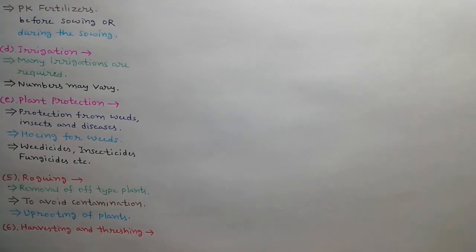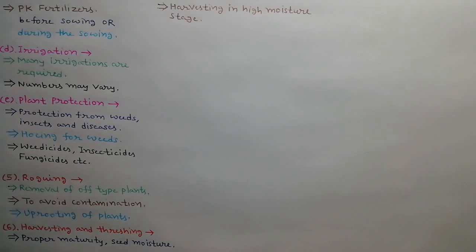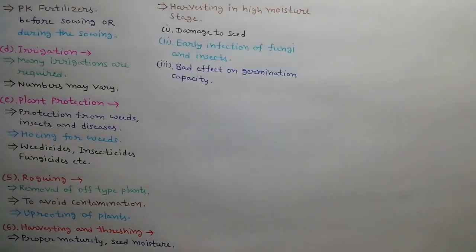6th step is Harvesting and Threshing. Harvesting should be done at the stage of proper maturity and proper seed moisture. Harvesting in high moisture stays cause many damages during threshing and cleaning such as damage to seed, early infection of fungi and insects and bad effect on germination capacity.